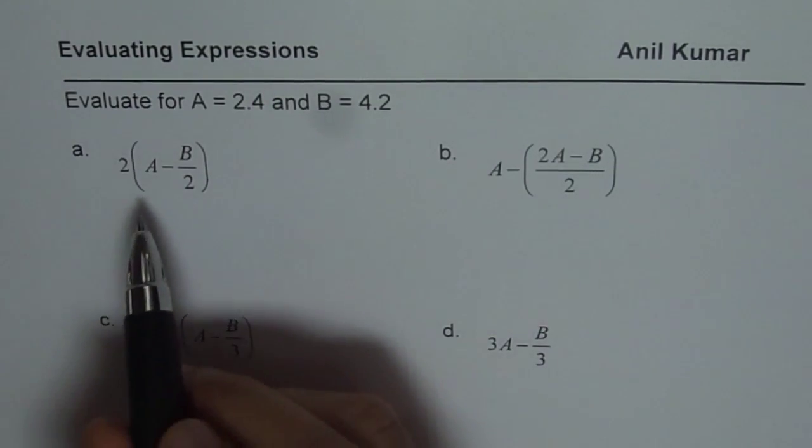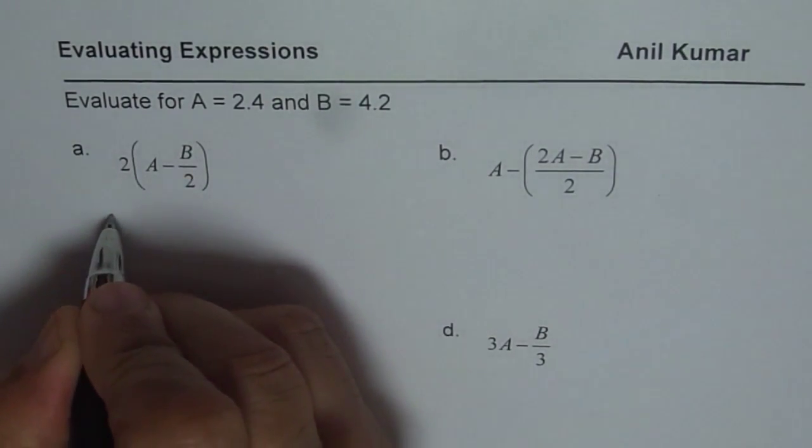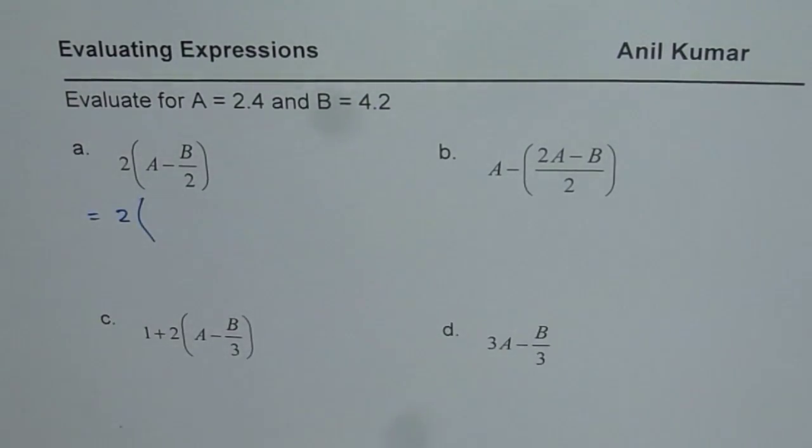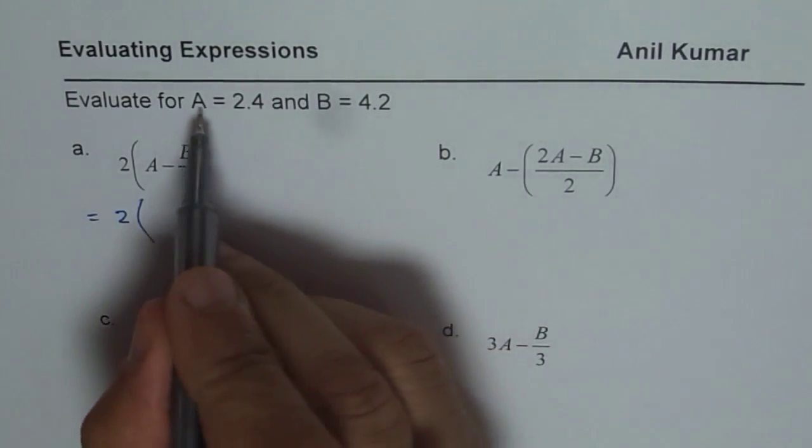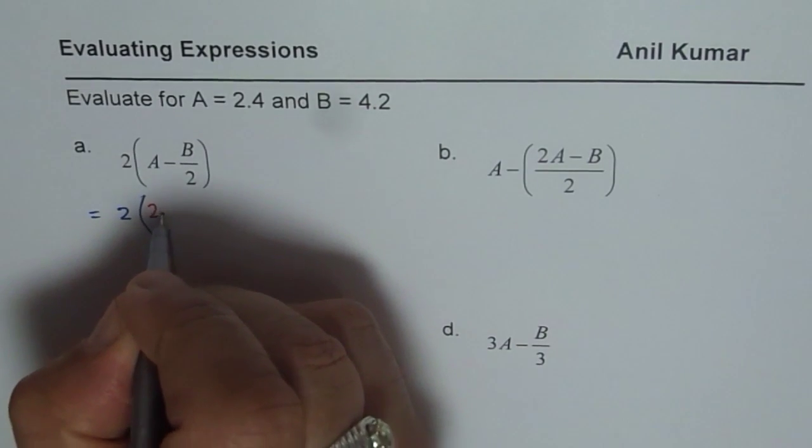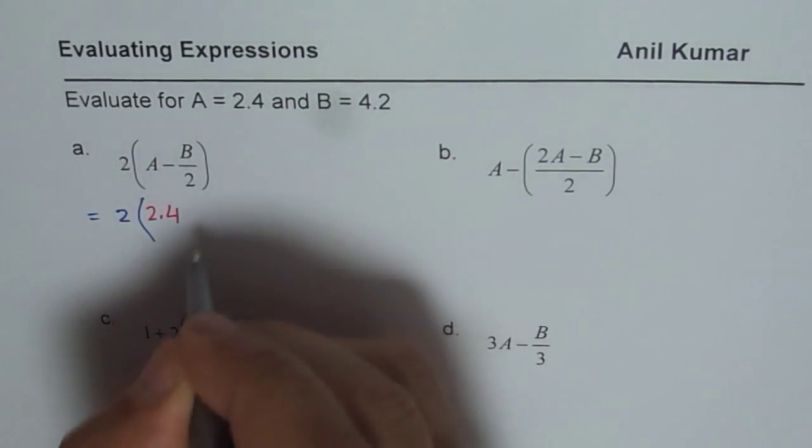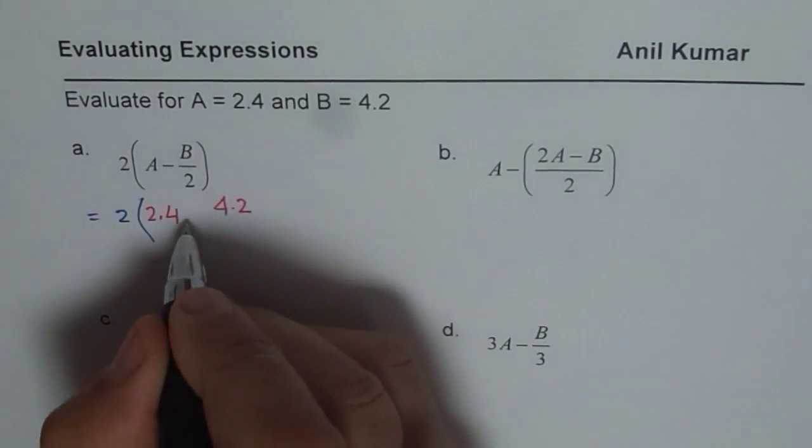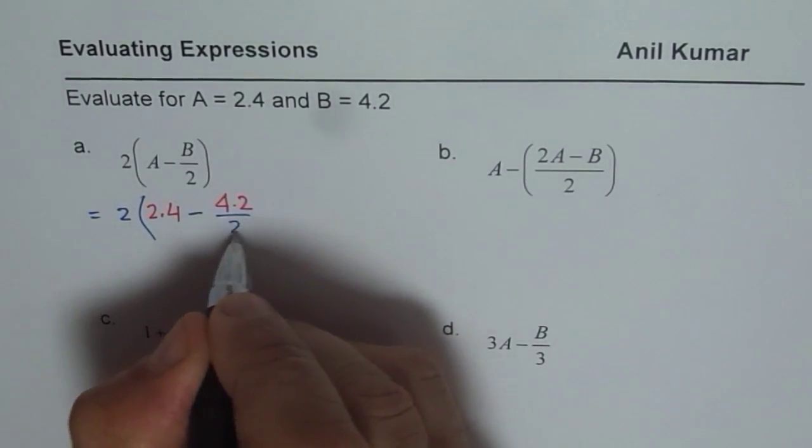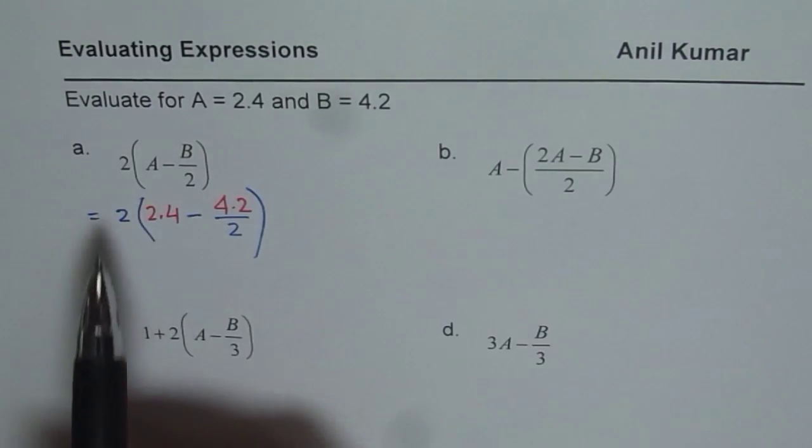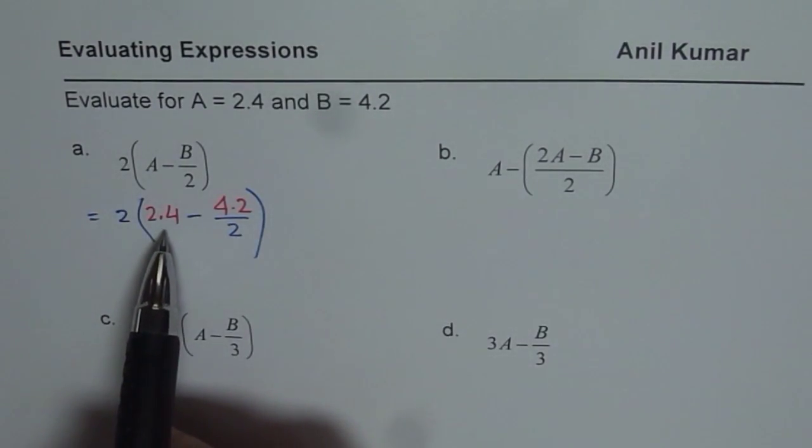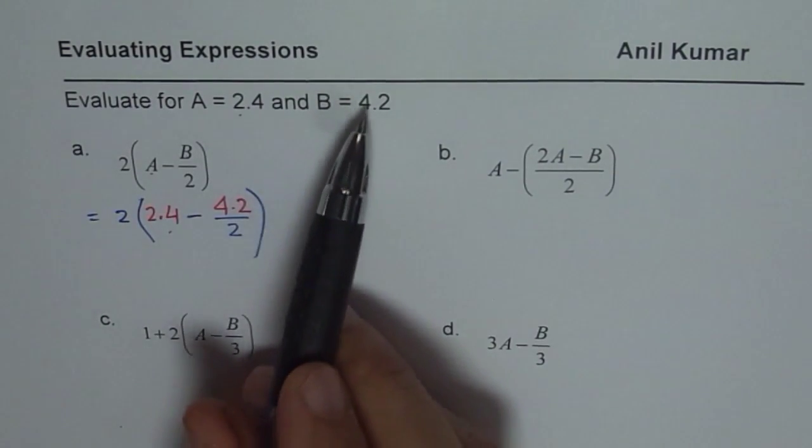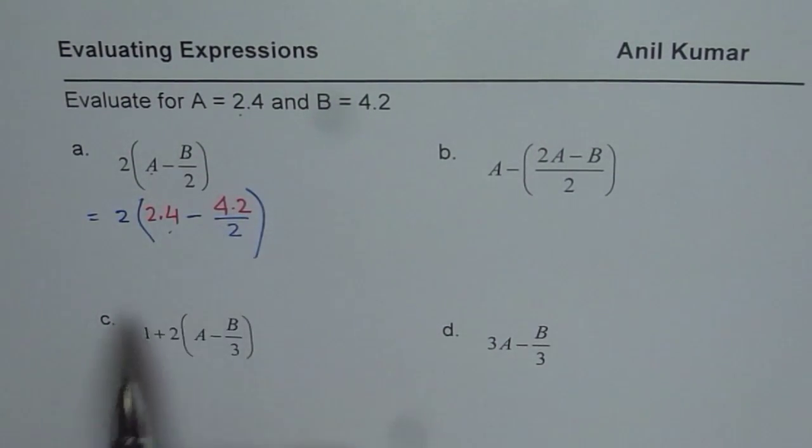So let's begin from the very first one. What we do here is write the expression and replace all these variables with their given value. A is 2.4, so it is 2.4, and B is 4.2. So let me write 4.2 here and complete the question. If you compare, what I have done here is I have replaced A by 2.4 and B by 4.2. That is the first step.